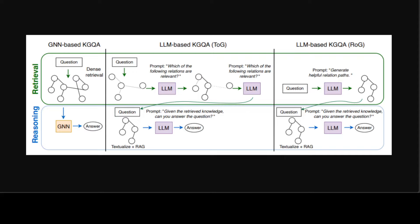The GNN based methods reason on dense subgraphs as they can handle complex and multi-hop graph information. Whereas LLM based methods employ the same LLM for both retrieval and reasoning due to its ability to understand natural language and that is what the diagram is showing you.